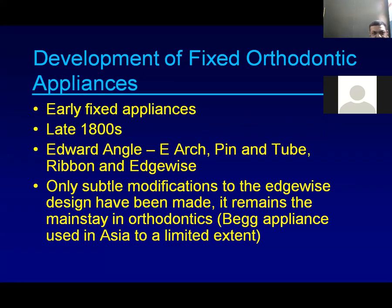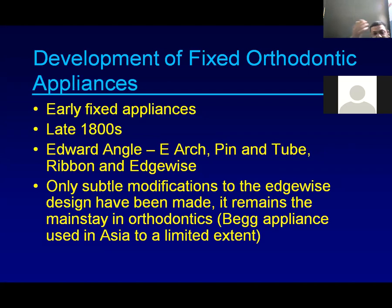The edgewise appliance is a modification of the E-Arch. Initially they used to have large appliances. The Begg appliance, which had a lot of single-point problems, was first developed in Australia and later transferred to India. Most people used to practice the Begg appliance but found many drawbacks. Then the edgewise appliance, introduced by Angle and further developed, was converted into what is called the straight-wire appliance.